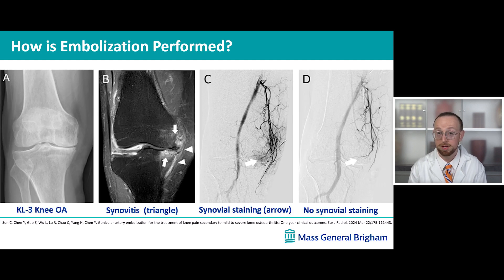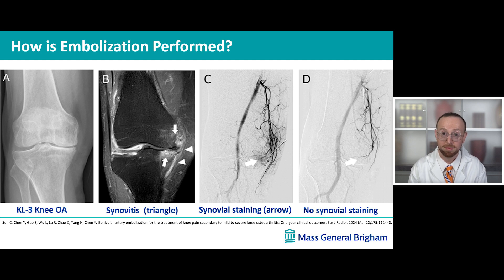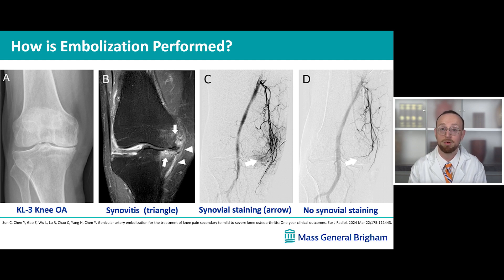This slide highlights what we look at and see during the procedure. In image A, there's an x-ray of a joint with osteoarthritis. In image B is an MRI image of that same person with osteoarthritis, and those arrows are pointing to the area of synovitis, or abnormally increased inflammation. In image C, the arrow is pointing to what we see in the angiogram during the procedure we perform. When we inject contrast dye, we're looking for abnormal areas of blush — abnormal areas of inflammation that correspond to the findings on the other imaging.